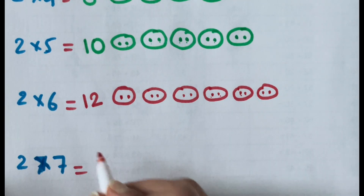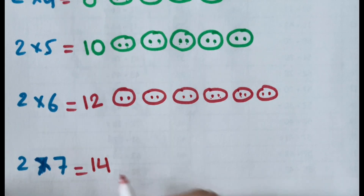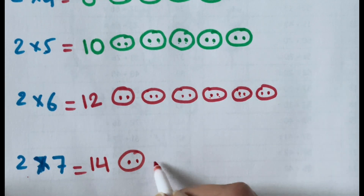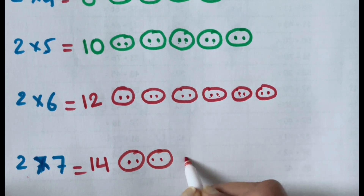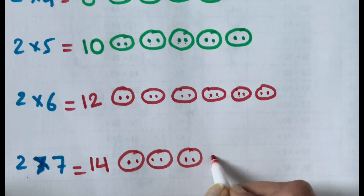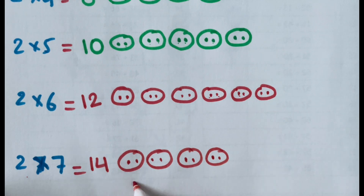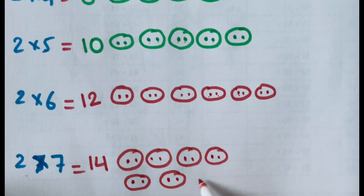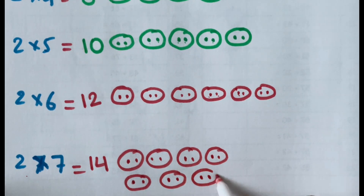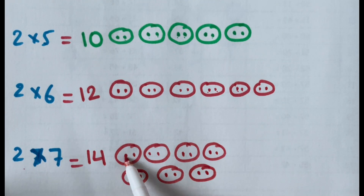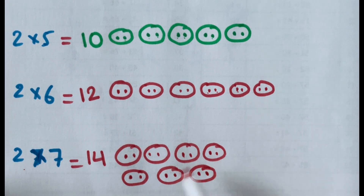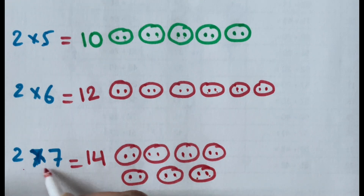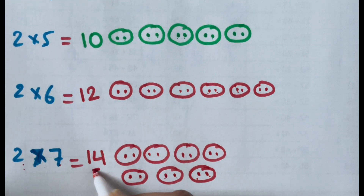2 times 7 is 14. That is 7 groups of 2. So 1, 2, 3, 4, 5, 6, 7, 8, 9, 10, 11, 12, 13, 14. 7 times 2 is 14.